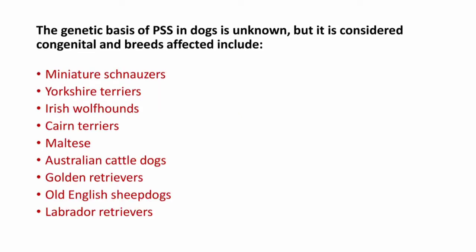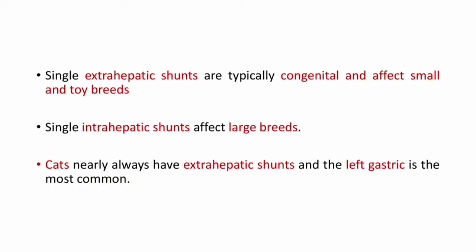The genetic basis of PSS in dogs is unknown but it is considered congenital. Breeds affected include miniature schnauzer, Yorkshire terrier, Irish wolfhound, Maltese, Australian cattle dog, golden retrievers, Old English sheepdog, and Labrador retrievers. These are the breeds most commonly affected with congenital portosystemic shunt.